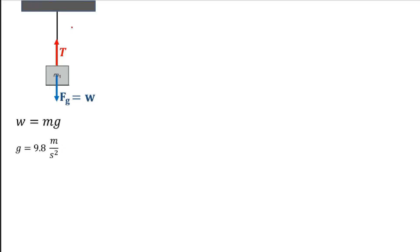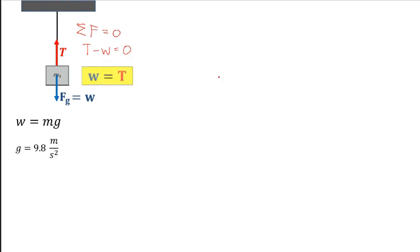Since this is in equilibrium, the summation of forces is equal to 0. Tension is positive because it's going up, minus weight which is going down, equals 0. If we transpose weight to the other side, we get that tension is equal to weight, or weight is equal to tension.